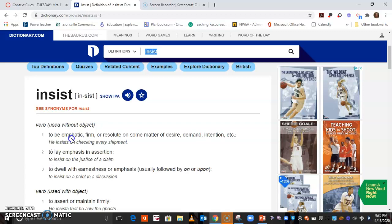We have the very first one: to be emphatic, firm, or resolute on some matter of desire, demand, or intention. And then there's the example in the sentence, 'he insists on checking every shipment.' Okay, now that sounds pretty similar to what we were just reading about, right? So I'm thinking one's probably gonna be our best definition, but let's check the rest just in case.